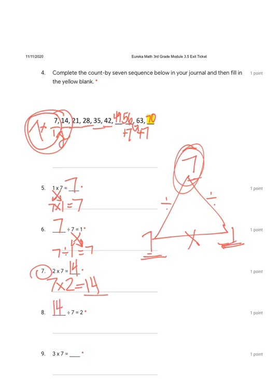Commutative property tells us if two times seven equals fourteen, then we also know that seven times two equals fourteen. Now let's turn this into division. Our biggest number is fourteen. We take fourteen and divide it into seven parts — there's going to be two in each part. We can also swap these numbers: divide by two parts and there would be seven in each part.